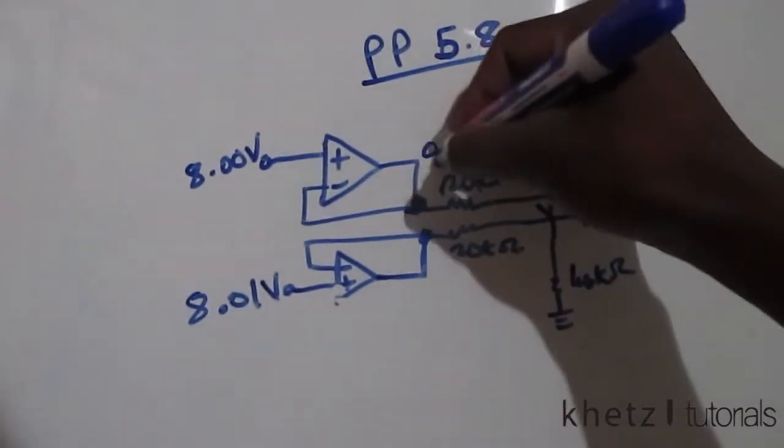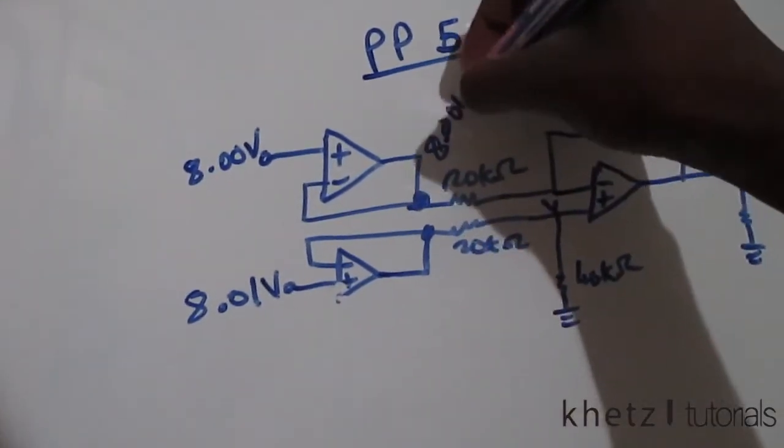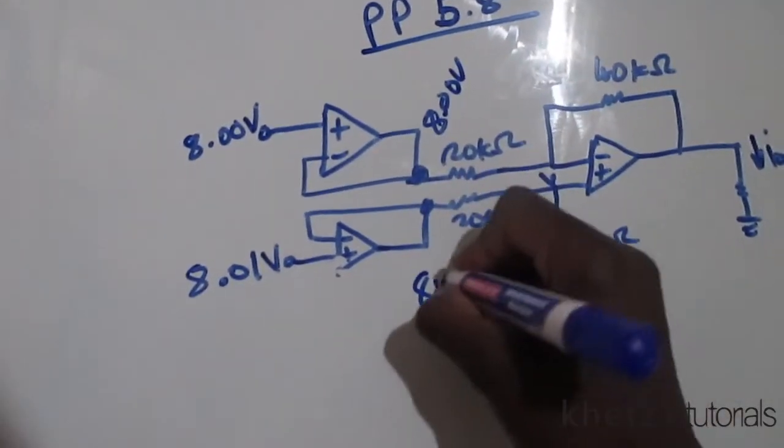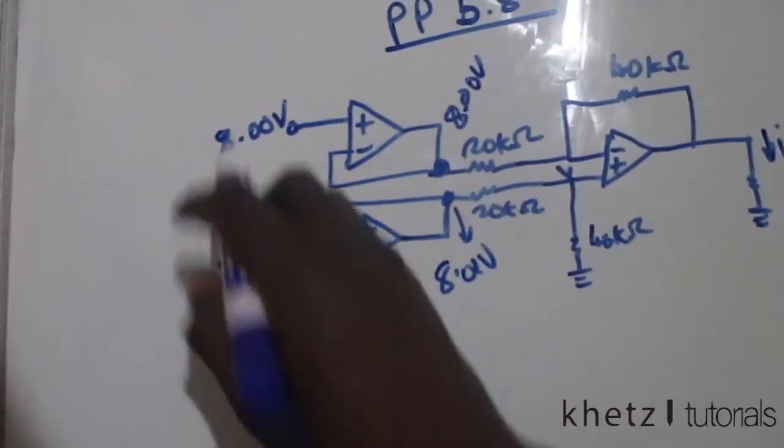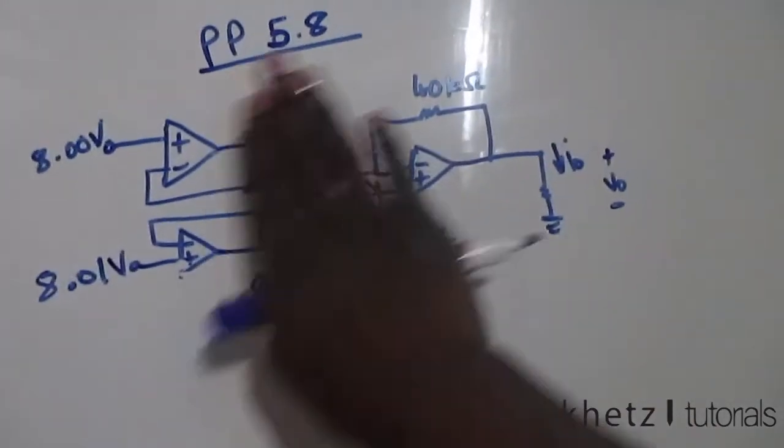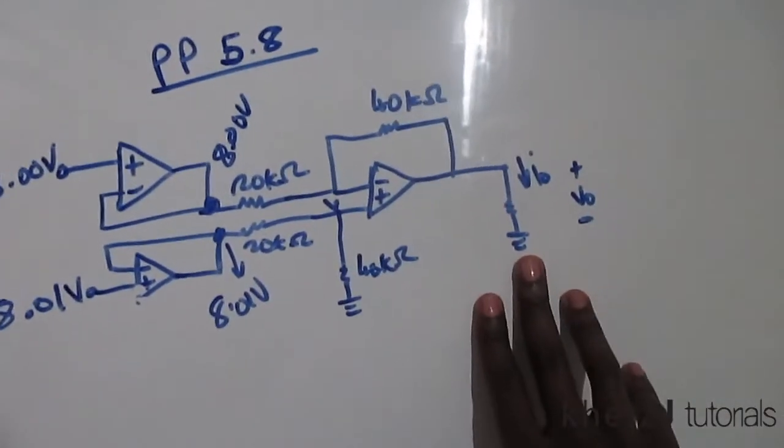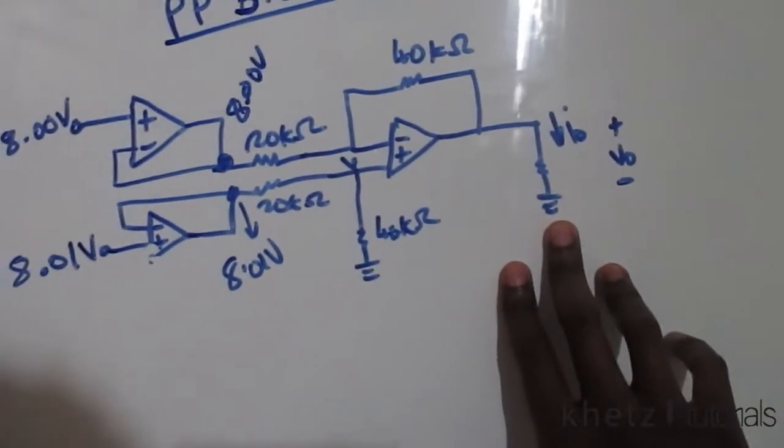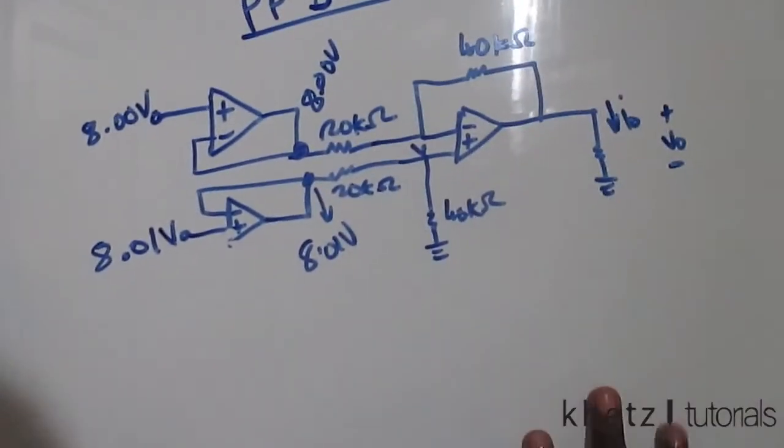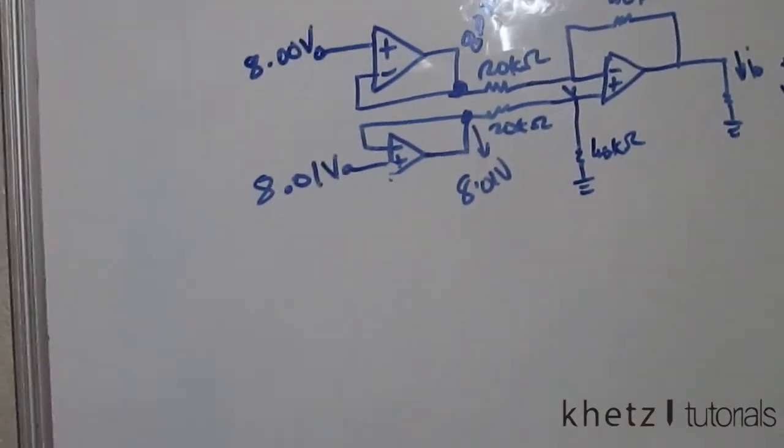At this point we have 8 volts, and at this point we have 8.01 volts as well, which is the same as that. Now on this side, you can see that this is a difference amplifier, and therefore you can apply the difference amplifier formula.